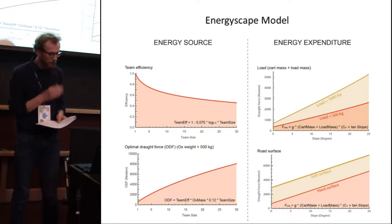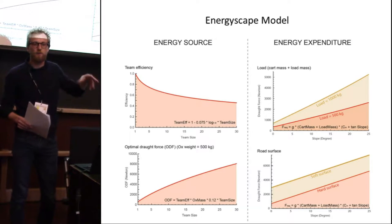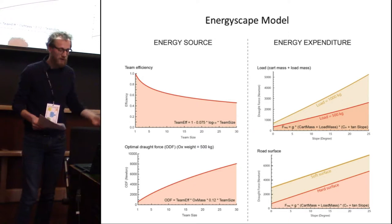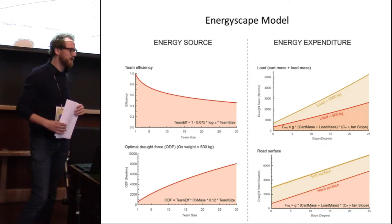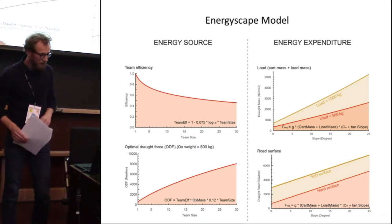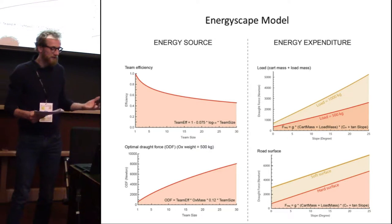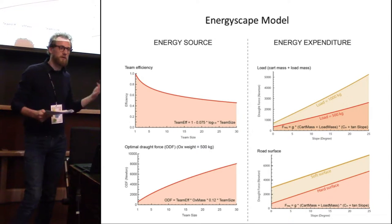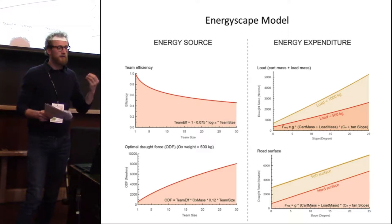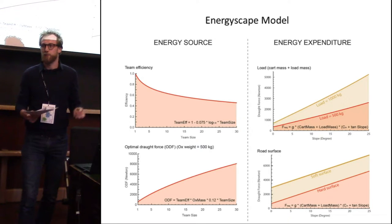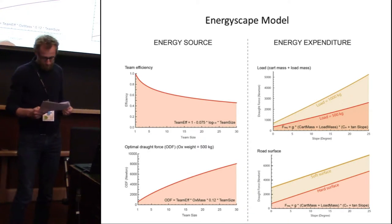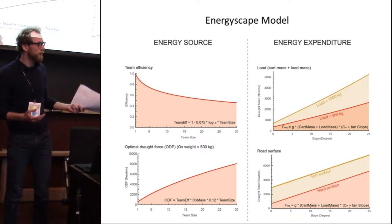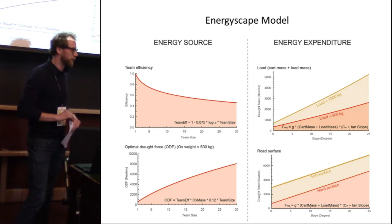We have four graphs: on the left side, all the variables that produce energy for movement; on the right side, all the parameters that consume energy during ox-cart transport. As a rule of thumb, one well-conditioned ox can deliver a force of about 10 to 12% of its body weight over the course of a full day. For shorter periods of time, this can go up to 24 to 30%. So the draft force an ox can produce depends primarily on its weight.